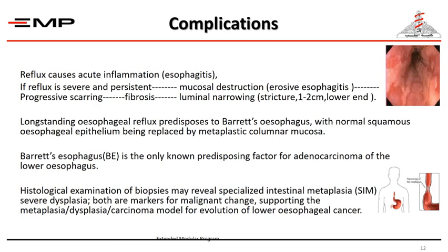Considering complications of gastroesophageal reflux disease: reflux causes acute inflammation — esophagitis — at the lower end of the esophagus. If reflux is severe and persistent, it results in mucosal destruction called erosive esophagitis. Continuation of this leads to progressive scarring, fibrosis, and luminal narrowing — what is called a stricture — usually one to two centimeters at the lower end.